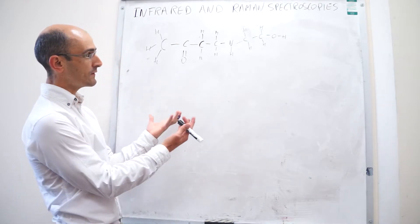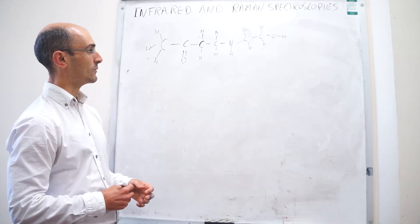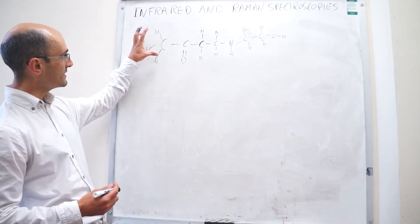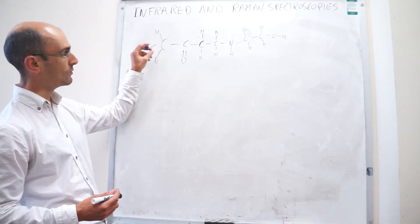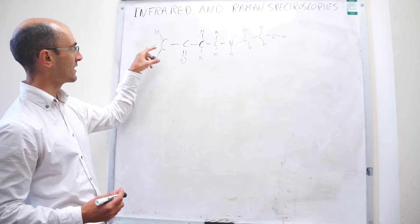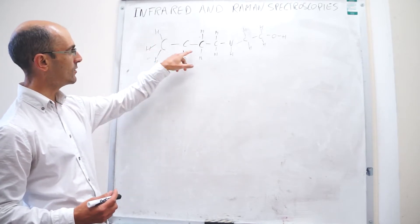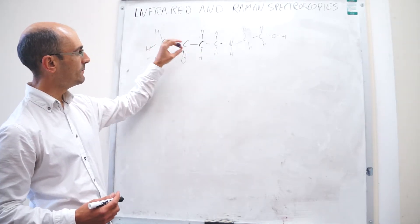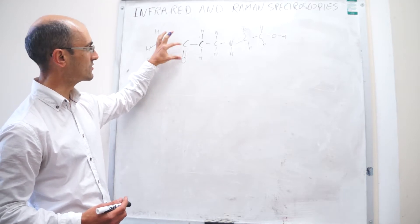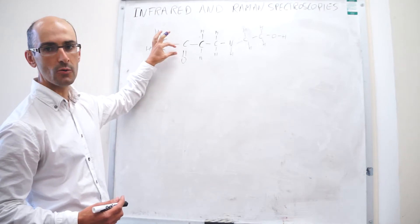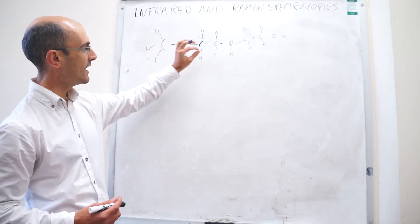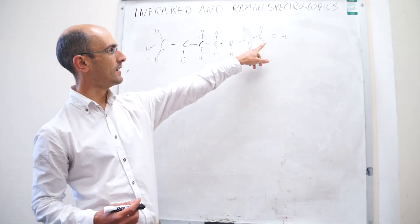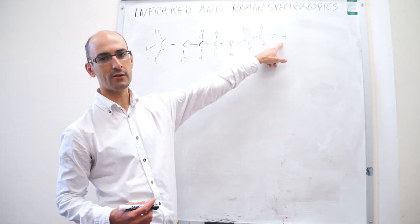When you start to think about what type of normal modes this molecule will have, you see that there are a lot of CH stretches. You will have symmetric and asymmetric stretches right here and then right there as well. But then you have a carbonyl right here, so there's going to be a CO stretch. And there's an NH stretch as well, which is a little different. And here you have an alcohol.